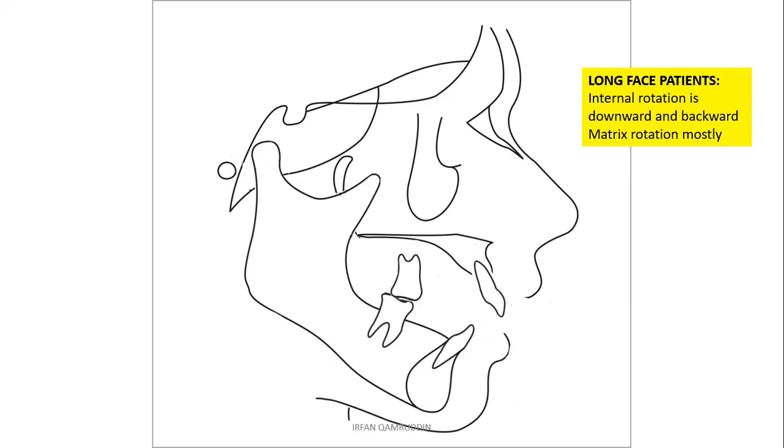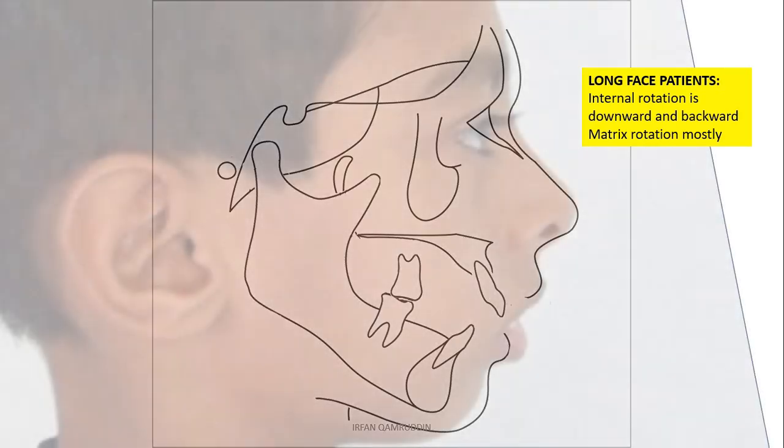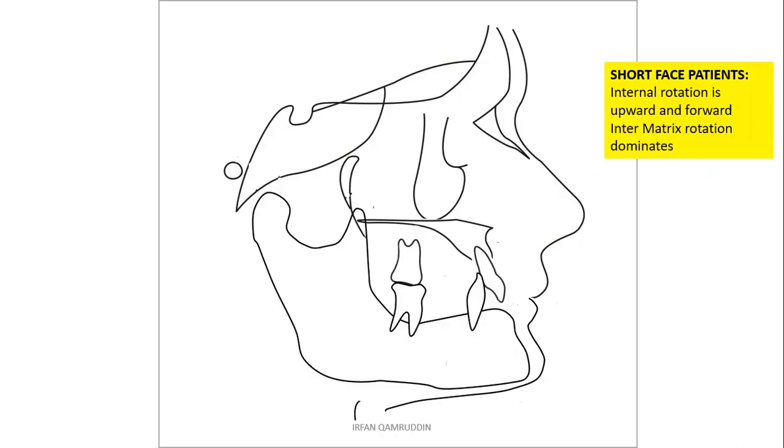Therefore the patient has the tendency towards open bite, he has convex profile, gummy smile. In short, this case was actually class 1 skeletal case but has been converted to class 2 because of vertical maxillary excess. We call them long face syndrome or long face patients. In these kind of patients, internal rotation is downward and backward and mostly matrix rotation, because you have seen that mandible was rotating around condyle. So in these type of cases, external compensation is almost negligible.